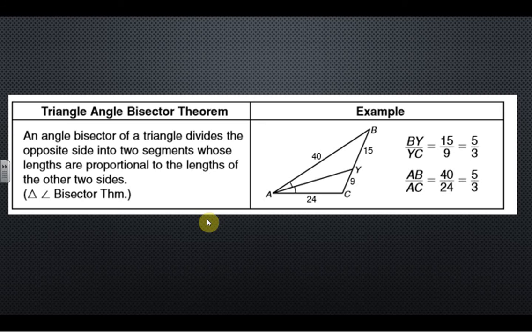The other theorem is the angle bisector theorem. Again, you don't need to remember the name, you just need to know what it looks like. When an angle is bisected, so AY in this case would be the bisector because these are the two congruent angles, it cuts it proportionally.